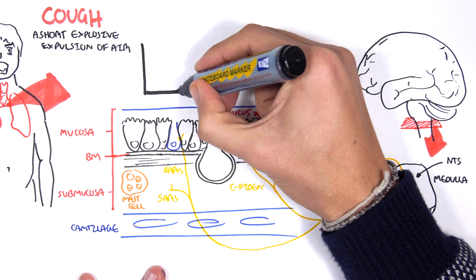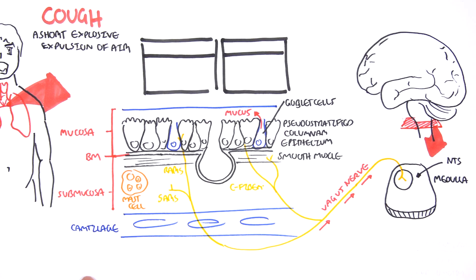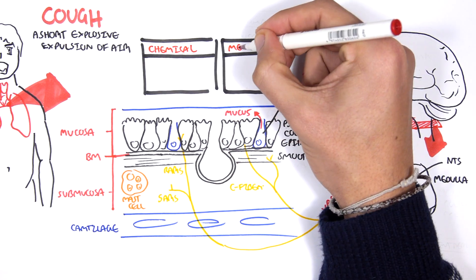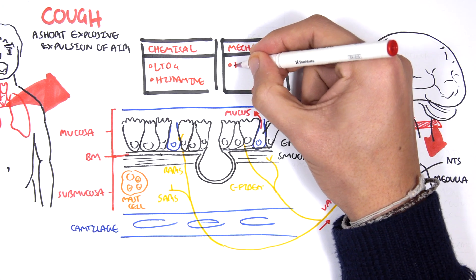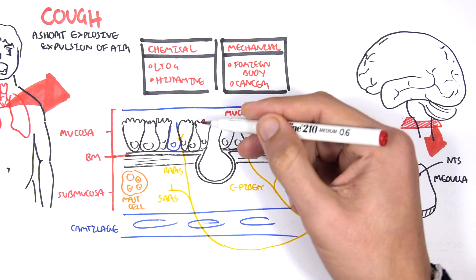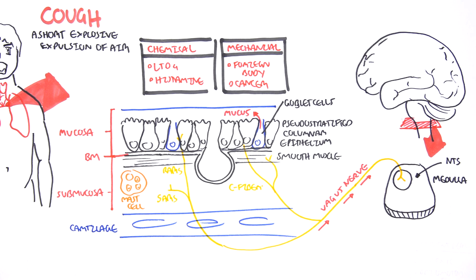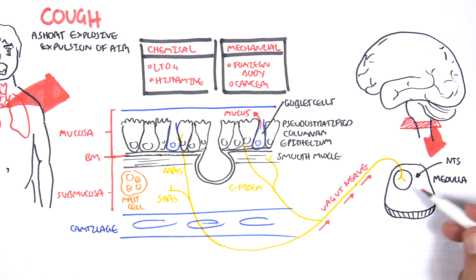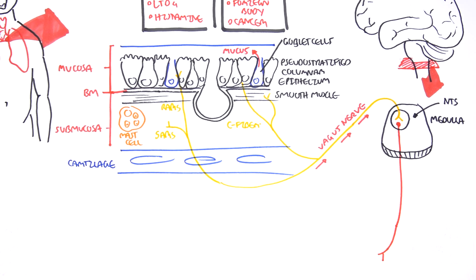So what initiates the cough? There can be chemical or mechanical things that initiate these sensory nerve fibers. Chemicals such as cytokines, LTD-4, leukotrienes, as well as histamine. Mechanical can be things such as a foreign body or a growth cancer. So these things can trigger these sensory nerve fibers, which will travel through the vagus nerve and bring this sensory information to the medulla, to the area known as the NTS.